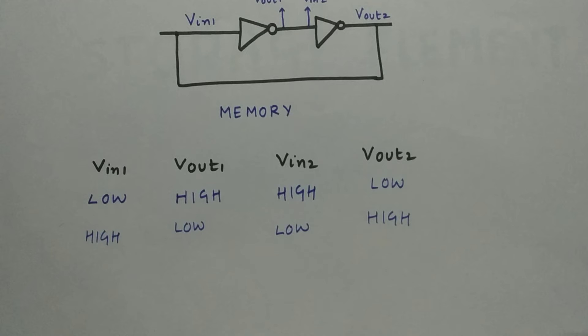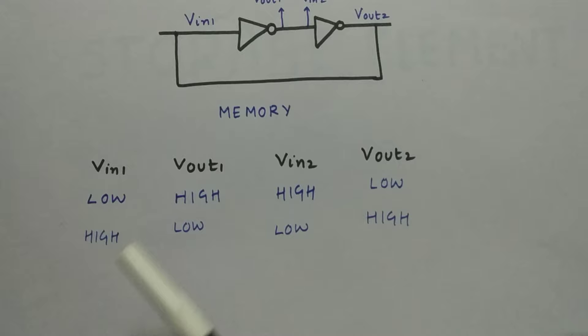One more important thing before going to the analog analysis: this circuit is called a bistable element because it gives us two values and is stable at either low or high. So this is a bistable element.